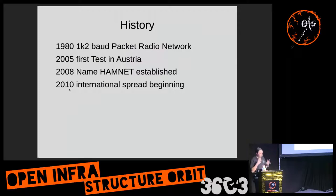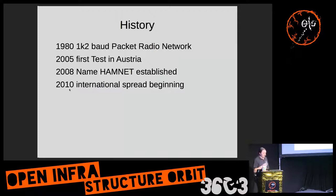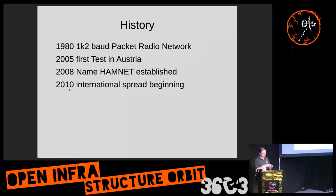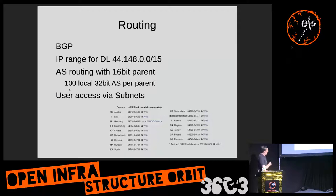A little bit of history: the amateur radio network started in the 80s with the so-called packet radio network. It was really slow — around 1.2 kilobaud, not that fast; after some time it reached 9.6 kilobaud, also not that fast. In 2005 in Austria the first tests were made on 2.4 gigahertz, and a little bit later the name hamnet was established. Around 2010 it became a little bit more international — Germany was in 2009 — so it's been spreading.